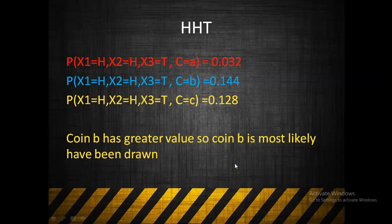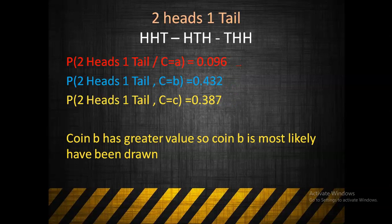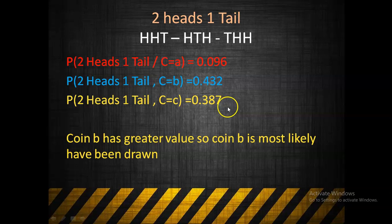So for the specific sequence Head, Head, Tail: coin A gives 0.032, coin B gives 0.144, and coin C gives 0.128. The highest probability is 0.144, so coin B is most likely to have been drawn. Similarly, for any ordering of two heads and one tail: coin A gives 0.096, coin B gives 0.432, and coin C gives 0.384. Again the greatest value is 0.432, so coin B is most likely to have been drawn.